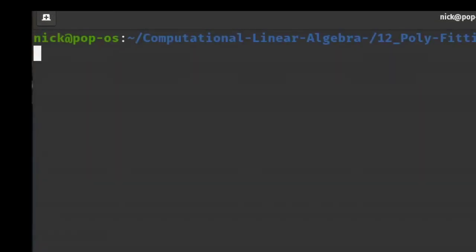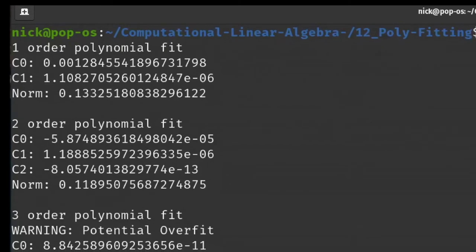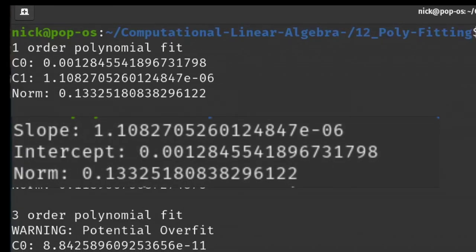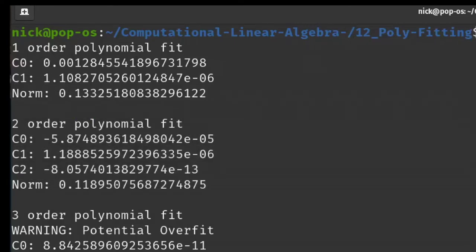If we take a look at running this code, you can see that for the first-order polynomial, if we take a snapshot of the results from the line-fitting video, you can see nothing's really changed. The vector norm is still fairly reasonable. Remember, with this vector norm, the closer we get to zero, the better our solution is or the more appropriate our model is.